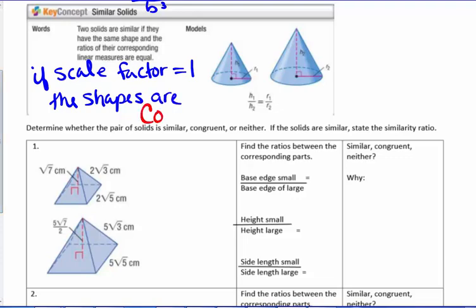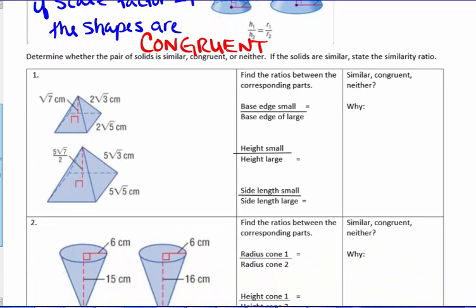In example one, we determine whether the pair of solids is similar, congruent, or neither. We start by comparing corresponding parts — the base edges of the small and the large. The square roots cancel, giving a scale factor of two to five. If these are similar, all scale factors will be the same, so let's check the height.